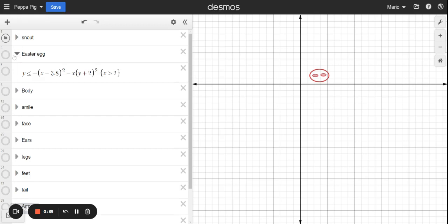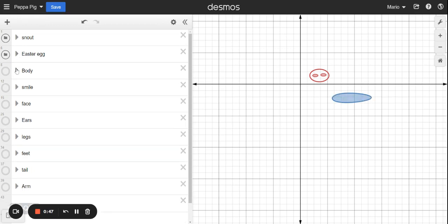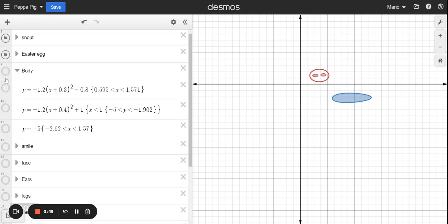Next, I actually added an equation. This is for an Easter egg. We'll talk about that in a little bit. And then I'll start with the body. So for the body, I added this part right here, and that's the body.